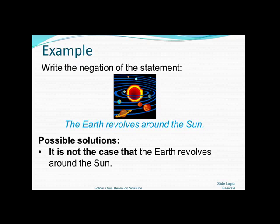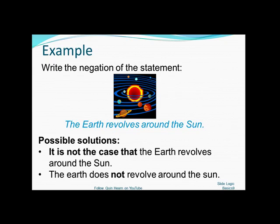So one possible solution is to say it's not the case that the earth revolves around the sun. The phrase it is not the case that is sort of a catch-all. You can negate anything using that phrase. The earth does not revolve around the sun is also a way of negating that statement.